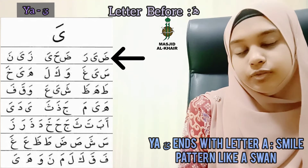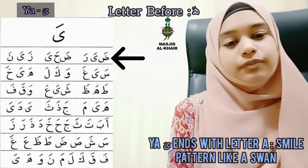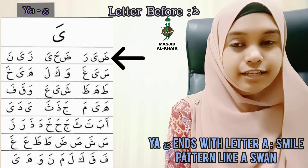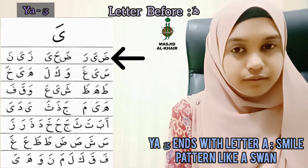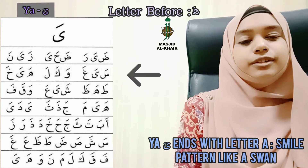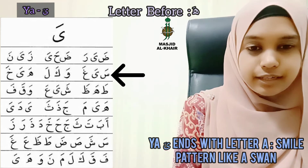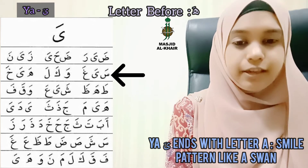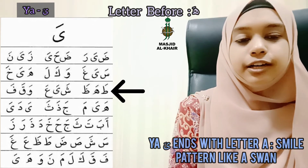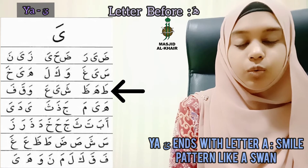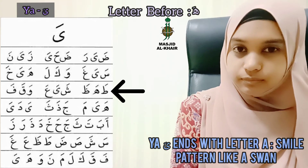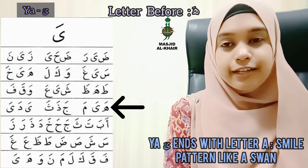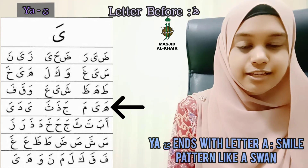So now I am going to read again line by line — you repeat after me. From the start: Do-ya-ro, Do-ha-ya, Za-ya-na. Masha'Allah, very good. Sa-ya-ro, Wa-ka-la, Ha-ya-ro. Alhamdulillah. Third one: Ta-ha-za, Sha-ya-ra, Wa-ka-fa. Alhamdulillah. Last one: Ha-ya-ma, Ja-za-tha, Ya-da-ya.